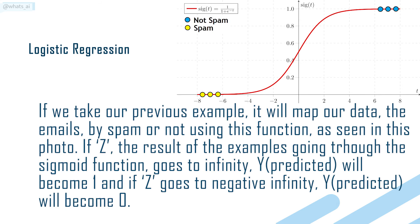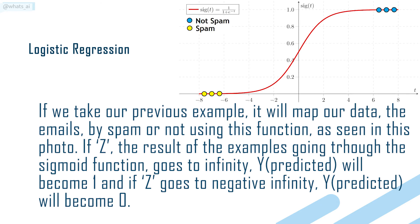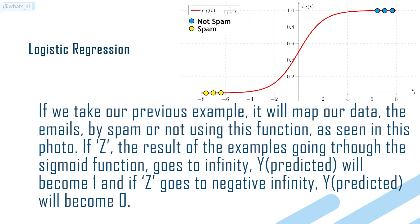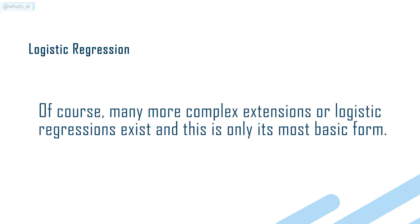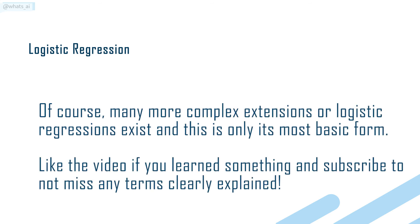If z — the result of the examples going into the sigmoid function — goes to infinity, y predicted will become 1, and if z goes to negative infinity, y predicted will become 0. Of course, many more complex extensions of logistic regression exist, and this is only its most basic form.